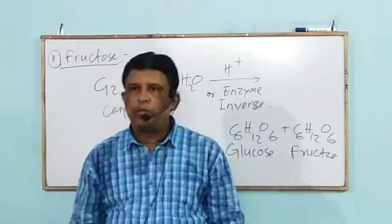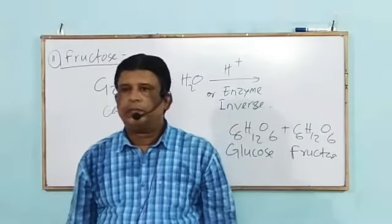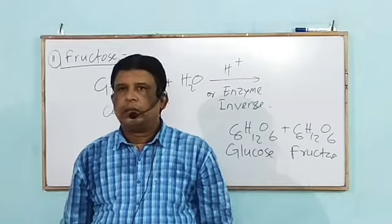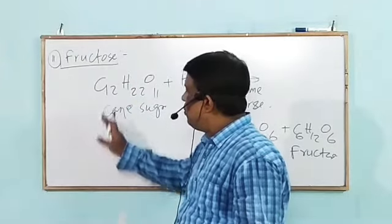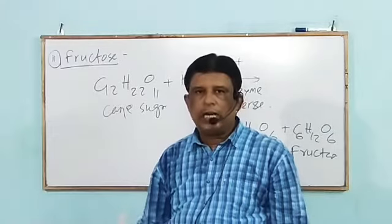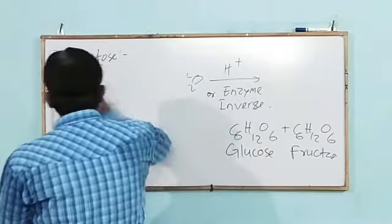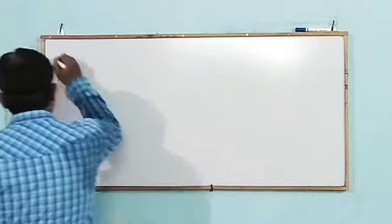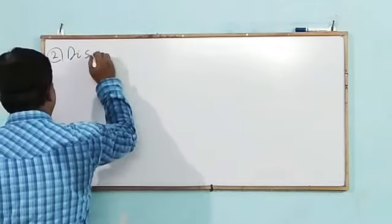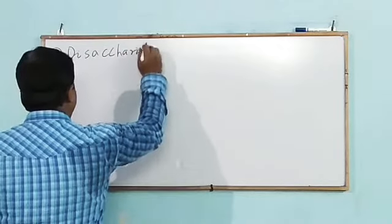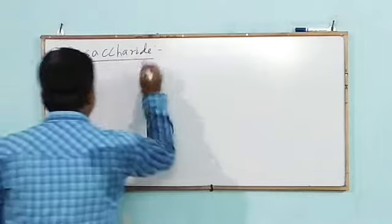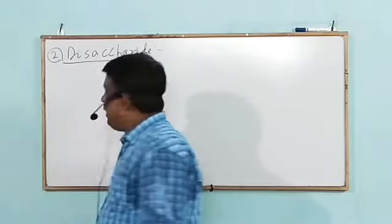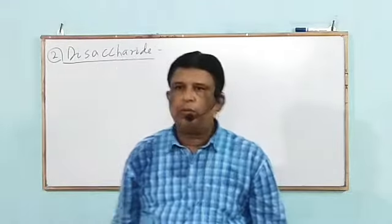Next, we observe that glucose and fructose are all about monosaccharide. Then we transfer to disaccharide. On acidic hydrolysis, disaccharides give two molecules of monosaccharide.